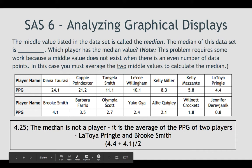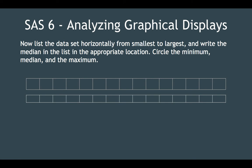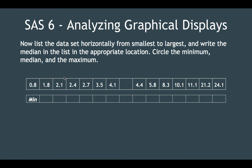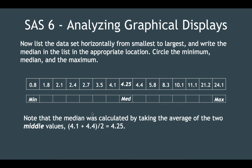Now let's list the data set horizontally from smallest to largest and write the median in the appropriate location, circling the minimum, the median, and the maximum. These are all the value points listed in order from minimum to maximum. We'll list the minimum, then the maximum, then put the median in there, which we calculated. Note that the median was calculated by taking the average of the two middle values — I want to make sure you understand how it was calculated.